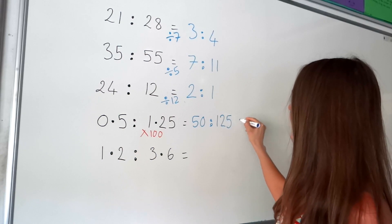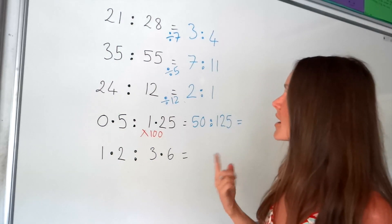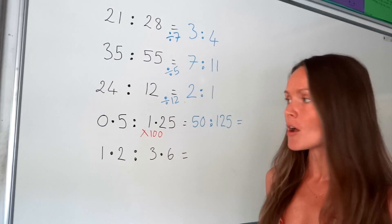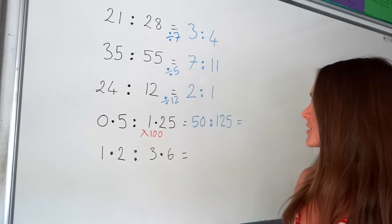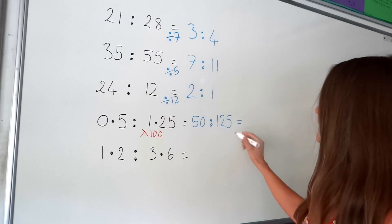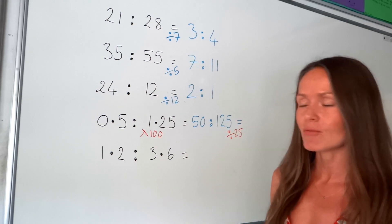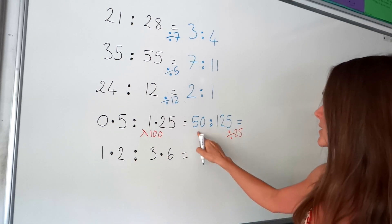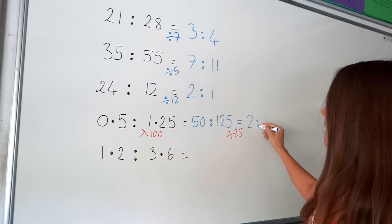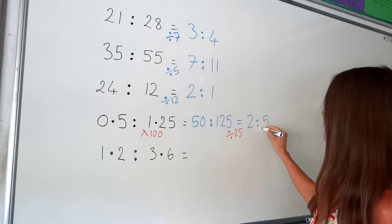Once you've done that, don't forget you need to simplify, just like in the previous questions. So look for the highest common factor. The highest common factor in this one is 25. So I need to divide both of those numbers by 25. 50 divided by 25 is 2, and 125 divided by 25 is 5.